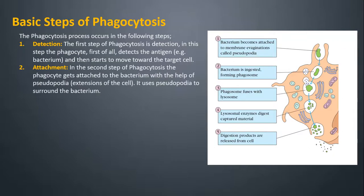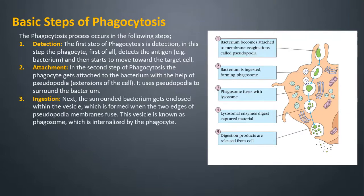Attachment — In the second step of phagocytosis, the phagocyte gets attached to the bacterium with the help of pseudopodia, extensions of the cell. It uses pseudopodia to surround the bacterium. Ingestion — Next, the surrounded bacterium gets enclosed within the vesicle, which is formed when the two edges of pseudopodia membranes fuse. This vesicle is known as a phagosome, which is internalized by the phagocyte.